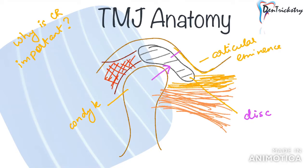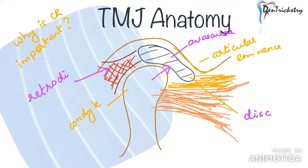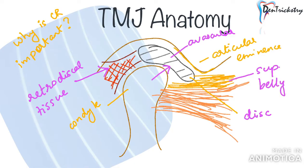However, behind the disc you have the retrodiscal tissue, which is highly innervated. So if your disc is pulled forward because of any pathology or trauma, that is when the pain starts. Then you have the most important muscle — the lateral pterygoid. You have the superior belly of the lateral pterygoid, which is attached to the anterior part of the disc, and the inferior belly of the lateral pterygoid, which is attached to the neck of the condyle.